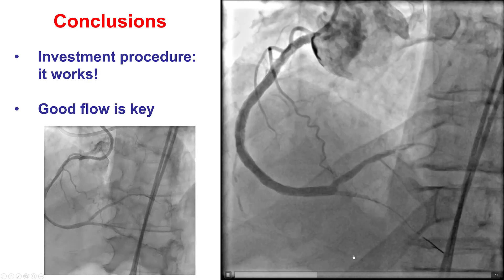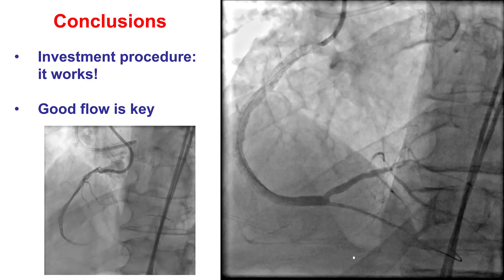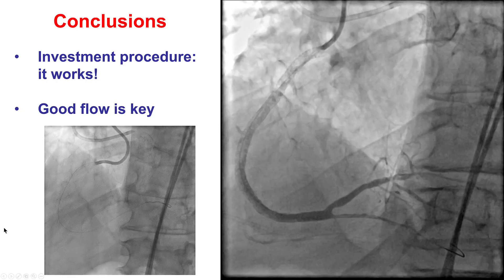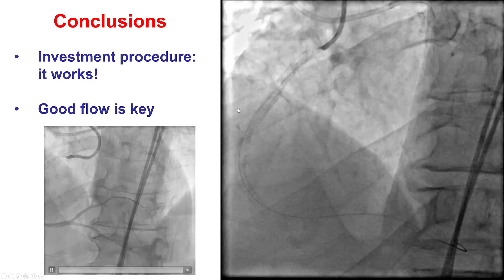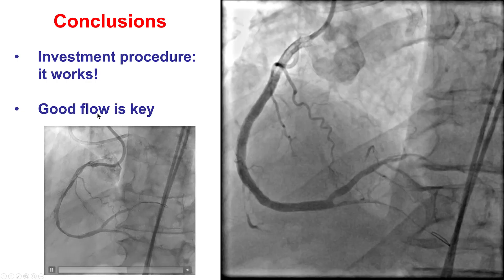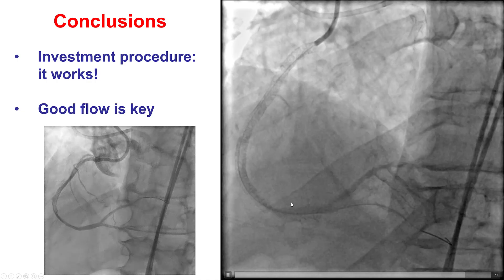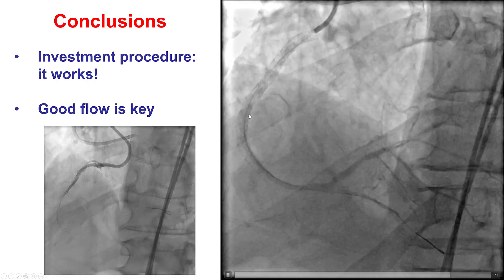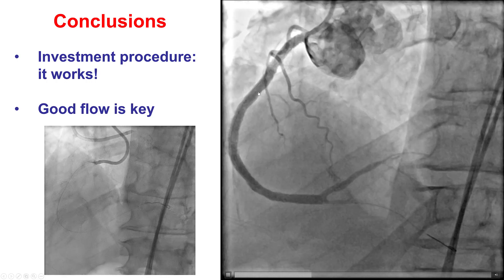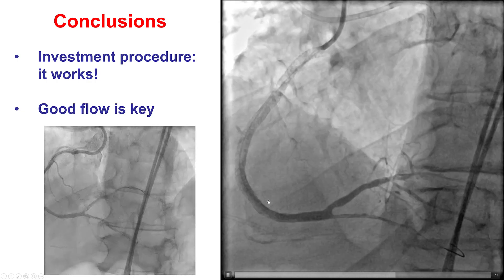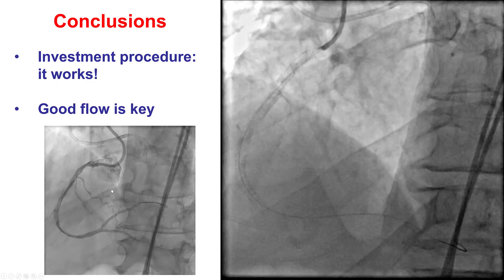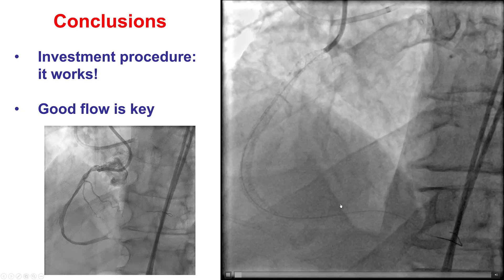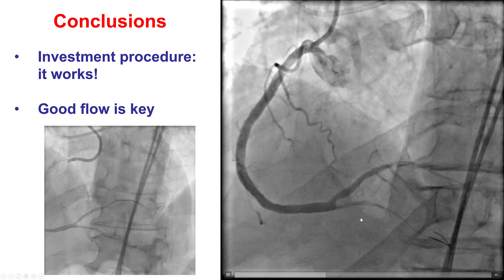In summary, this is an example of a good outcome with an investment procedure. We did have extensive areas of dissection on the right coronary artery during the index procedure, but we had good TIMI flow, which is key for maintaining patency in those vessels. Ideally, patients return after about two months to allow enough time for the dissections to heal, but not so long that the vessel might re-occlude. In our case, the patient came a little later at six months, but there was still antegrade flow into the RCA, which was easily wired and stented, followed by wiring and ballooning of the PDA.